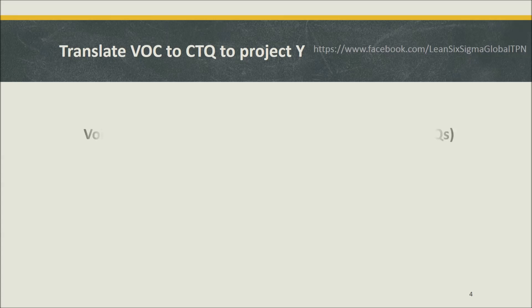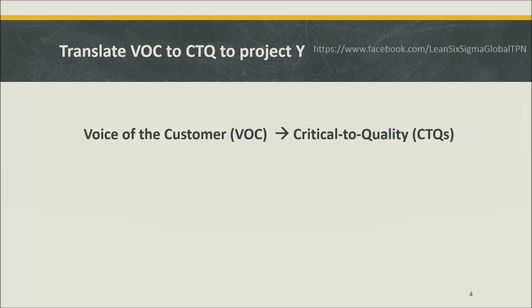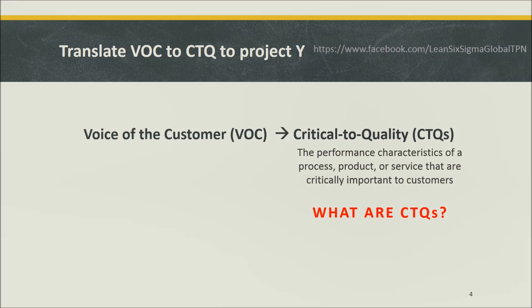So, what are CTQs? CTQs are performance characteristics of a process, product, or service that are critically important to customers. CTQs are measurable — how good they need to be in order to satisfy the needs and expectations of customers can be determined and established.